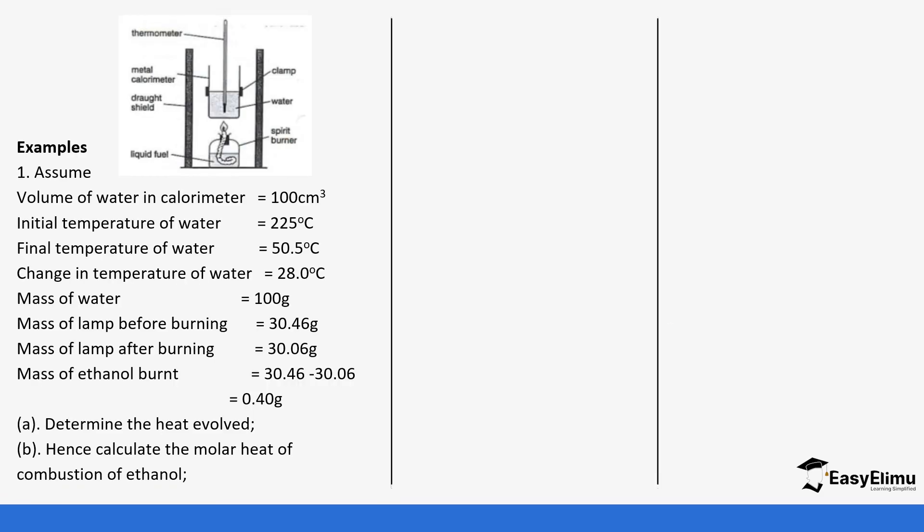Let's look at a certain setup. Ethanol was burned in the spirit lamp and it heated 100 centimeters cubed of water. The initial temperature of the water was 22.5, the final was 50.5 so the change was 28.0. You'll notice in our formula we have kelvins so we do not convert 28.0 degrees celsius to kelvin but if you convert 22.5 degrees celsius into kelvin which will give you 295.5 and if we convert 50.5 degrees celsius into kelvin it will give you 323.5 these are both in kelvin. If you do the subtraction you get 28 that's the reason why we do not go ahead to convert 28.0 degrees celsius into kelvin it's already in kelvin.